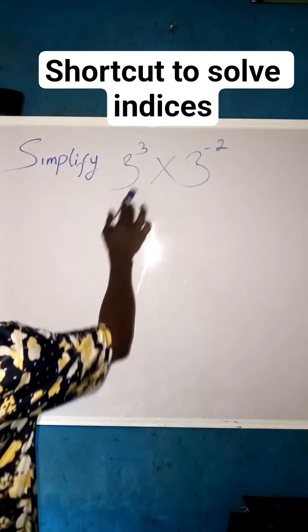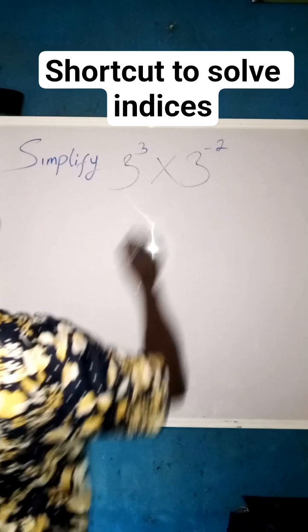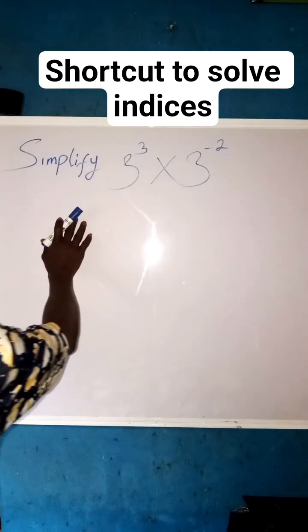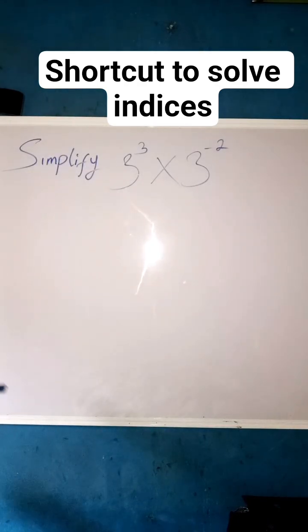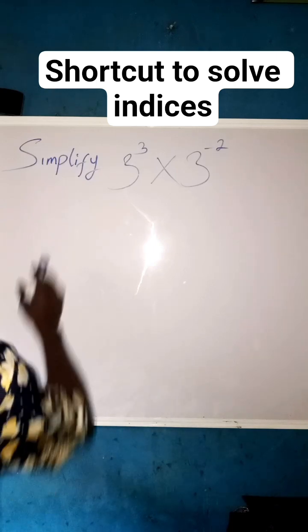Simplify 3 raised to the power 3 times 3 raised to the power minus 2. We are going to solve this question in two ways. One is longer, one is shorter, very short. So let us solve.